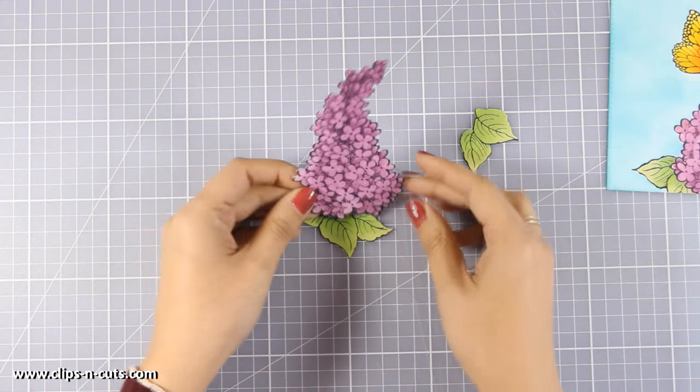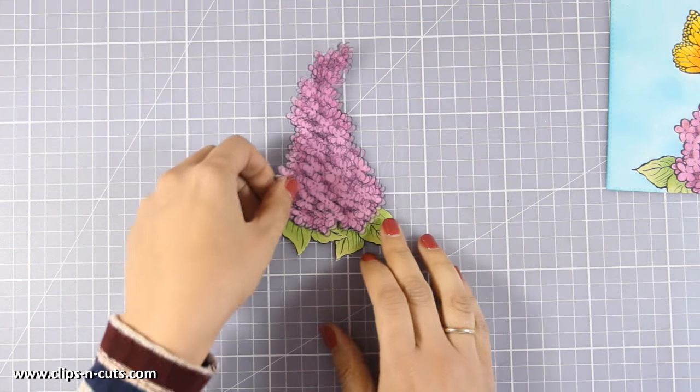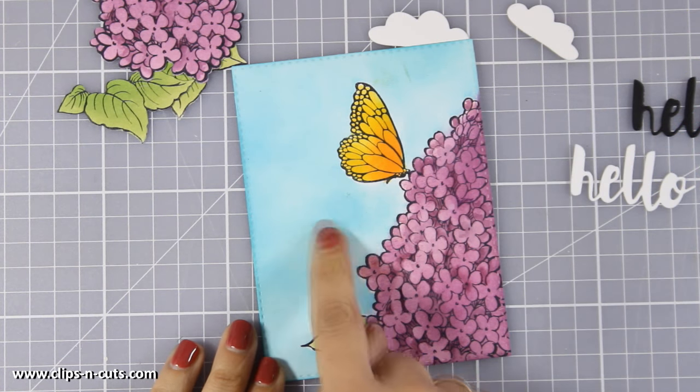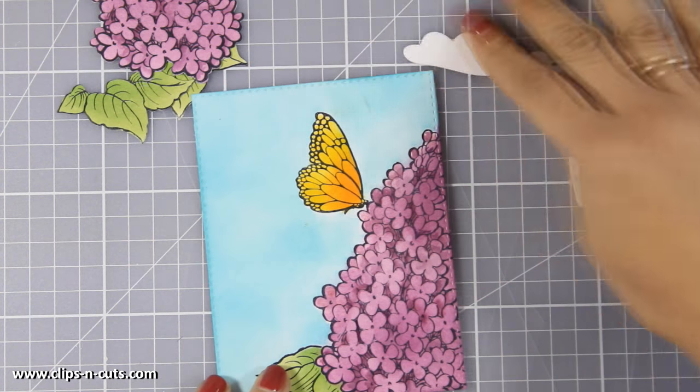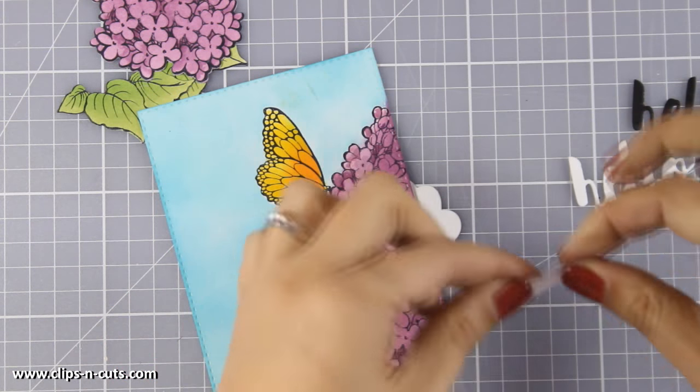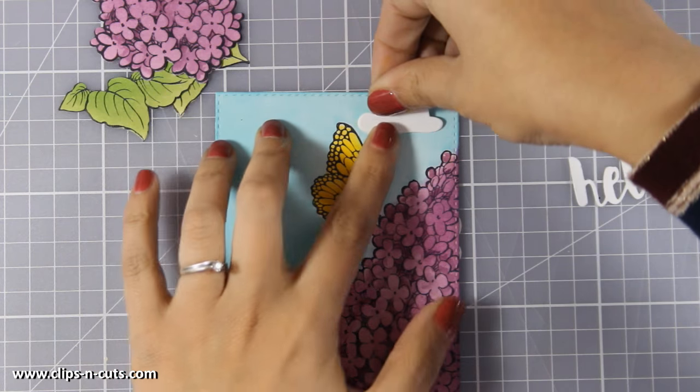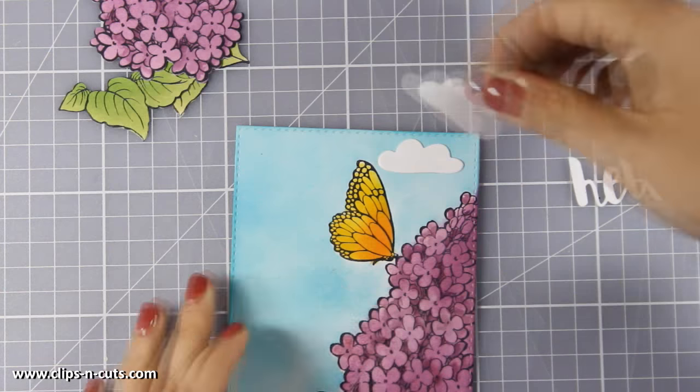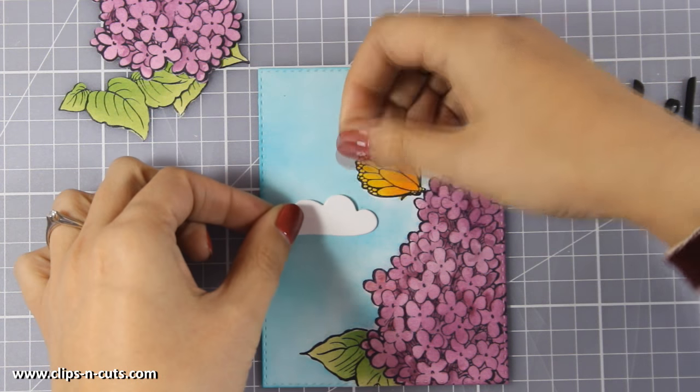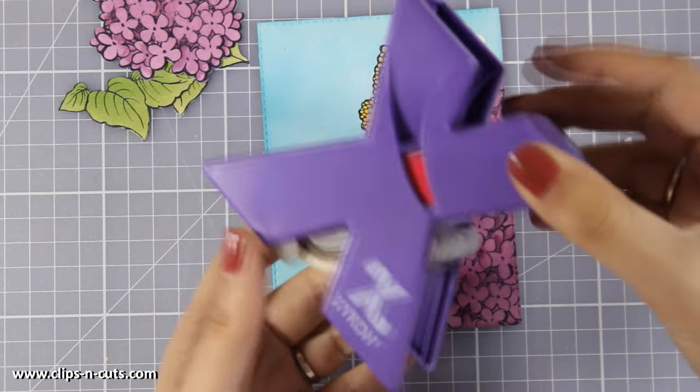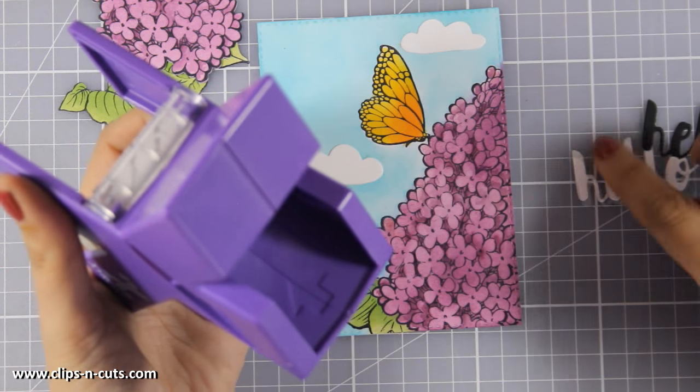So now I have my panel ready and these are going to go inside my card as a pop-up element. Now I don't know if you can see but I have some smudges and a blob of color that my blending tool didn't work perfectly there so I am going to cover up everything that I don't like with those clouds. Just to show you what I do when I am making something that I don't really like I just cover it up with another element.